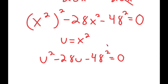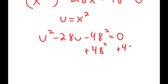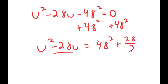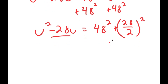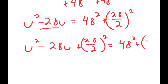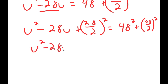I'll solve this by completing the square. Adding 48 squared to both sides gives u squared minus 28u equals 48 squared. Then I add 28 over 2 squared — that is, 14 squared — to both sides. So I get u squared minus 28u plus 14 squared equals 48 squared plus 14 squared.